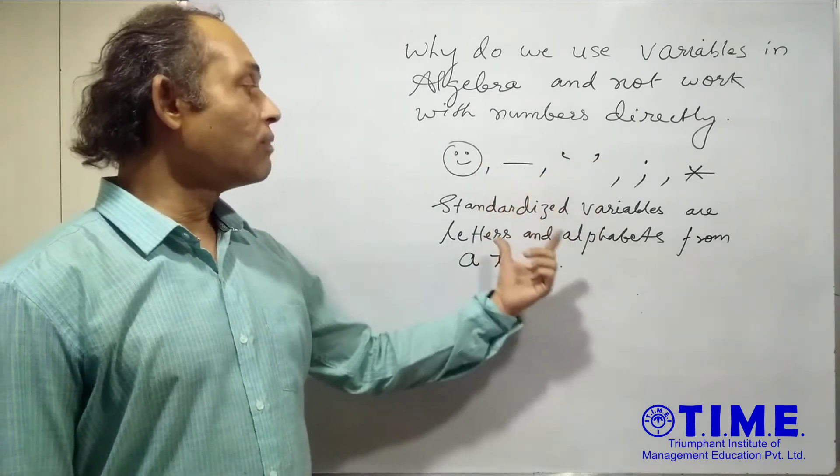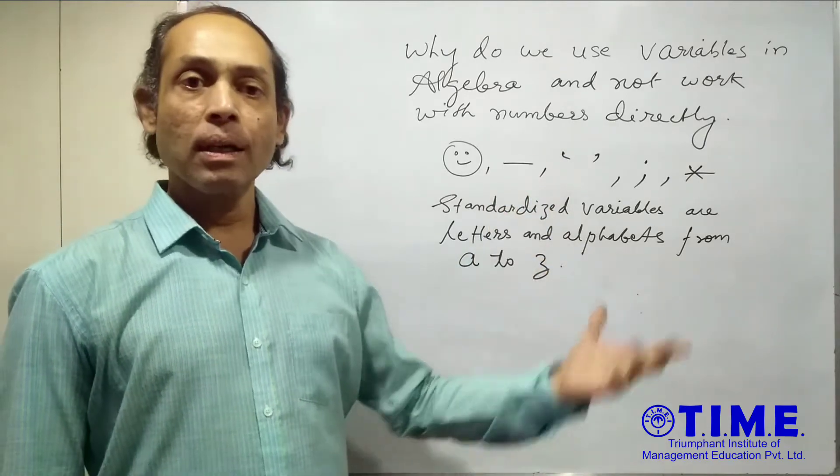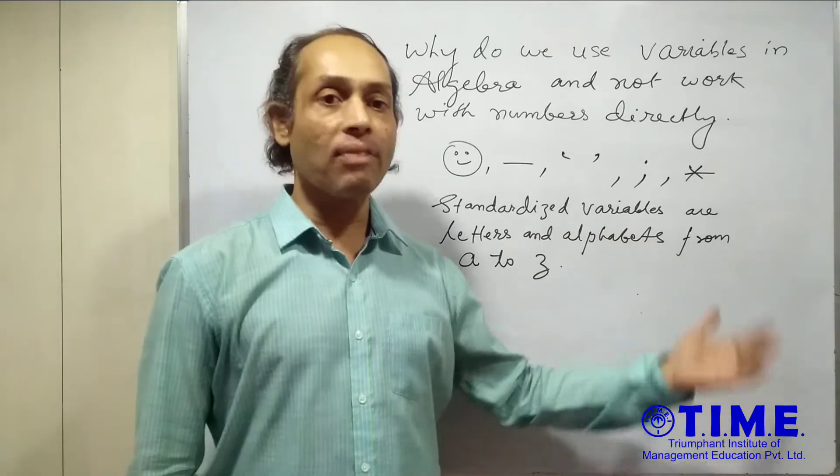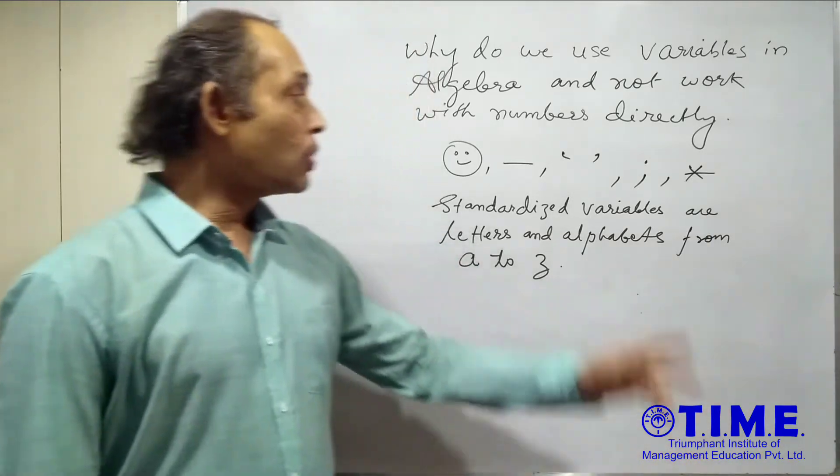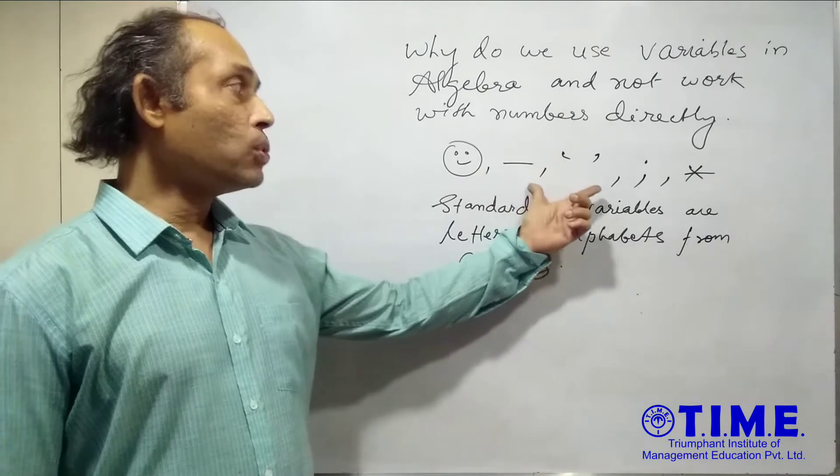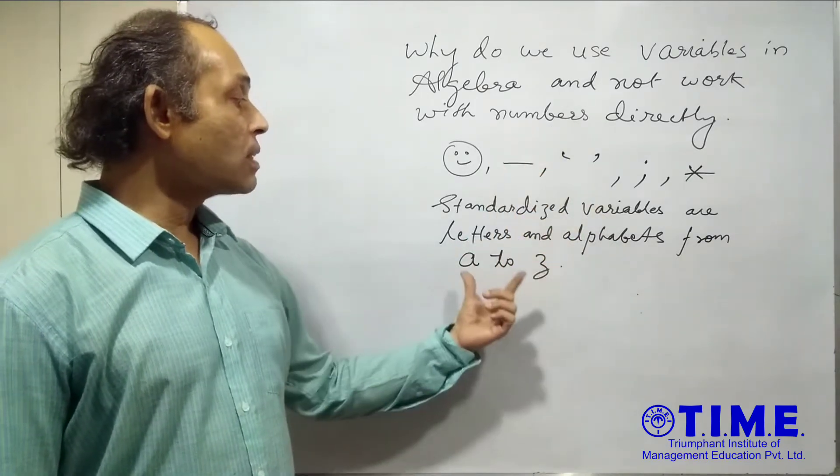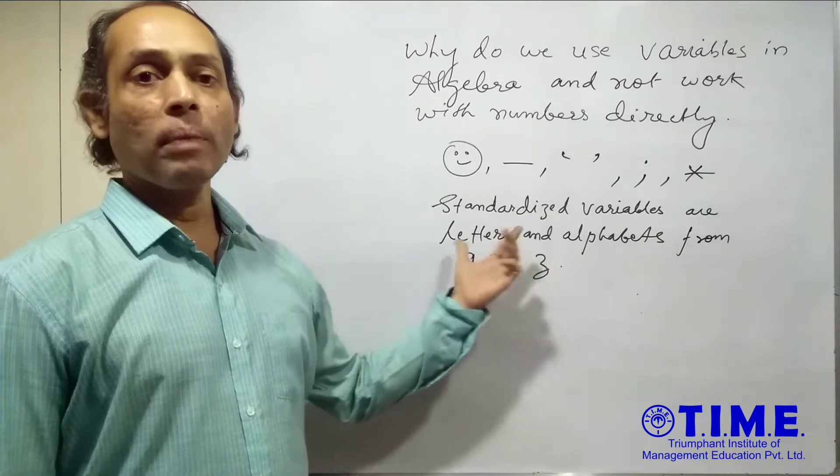Because when we use variables for the unknowns, we work out the equations and then we solve the equations and we get the final answer or arrive at the final solution. So in order to avoid that particular confusion using these particular characters, we use variables such as alphabets and letters from A to Z.